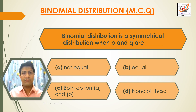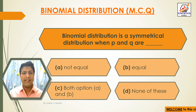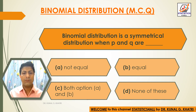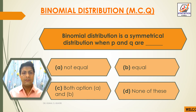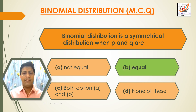Next question: Binomial distribution is a symmetrical distribution when p and q are dash. Option A: Not equal. Option B: Equal. Option C: Both A and B. Option D: None of these. The answer is option B — Equal. Binomial distribution is symmetrical when p and q are equal.